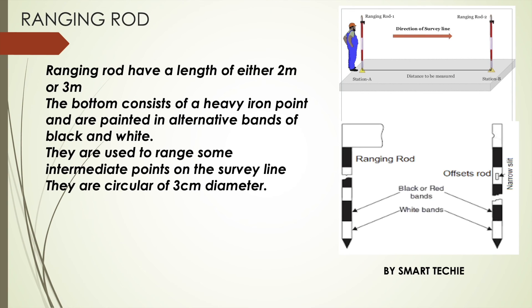Ranging rods have a length of either 2 meter or 3 meter. The 2 meter length being more common, the bottom consists of a heavy iron point and are painted in alternative bands of black and white. They are used to range some intermediate points in the survey line. They are circular of 3 centimeters nominal diameter. The rods are almost invisible at a distance of about 200 meters.